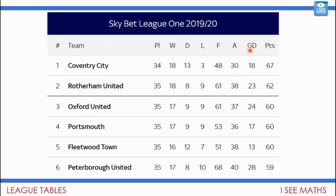GD stands for goal difference — the difference between the number of goals you've scored and the number of goals against. In total, Coventry City have 67 points. The way you work out points in football is: you take the number of games you win, multiply that by three — three points each time you win. So that gives 54 points for all the matches Coventry won. Each time you draw you get one more point, so that's another 13 points, making 67 points total.